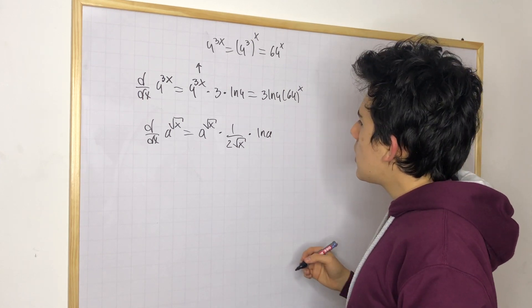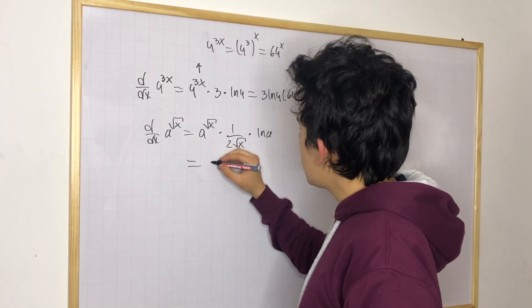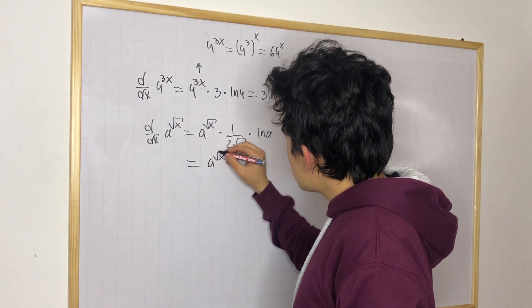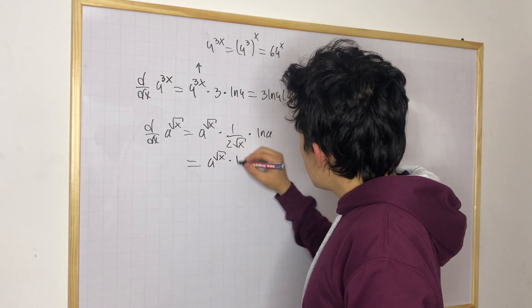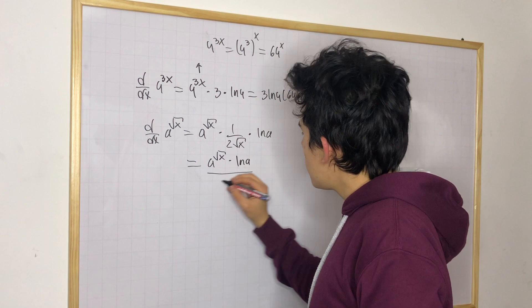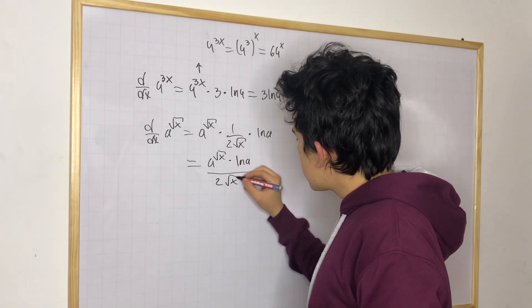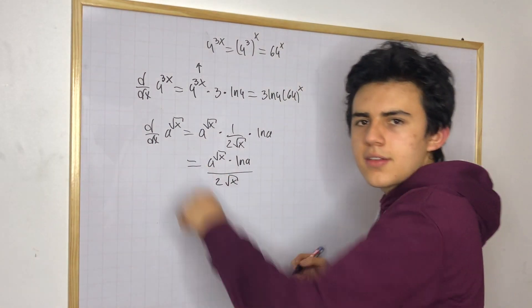And in this case, what you can do is just multiply everything. So, you're going to have a to the square root x times ln a over 2 times square root x. This is your answer for this derivative.